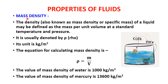First is density, also known as mass density. Density is divided into various types: mass density and weight density. The density, also known as mass density or specific mass of a liquid, may be defined as the mass per unit volume at a standard temperature and pressure. It is usually denoted by the letter rho.